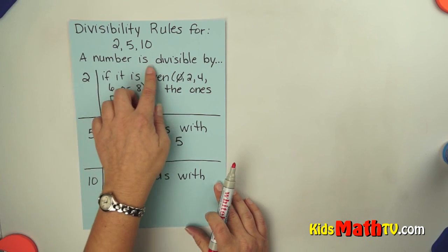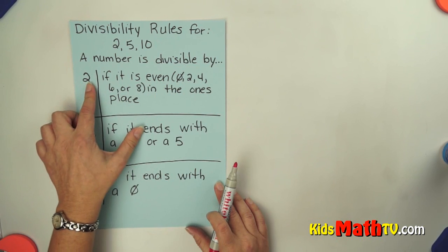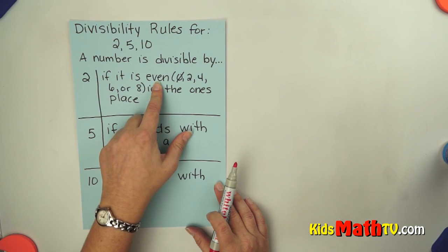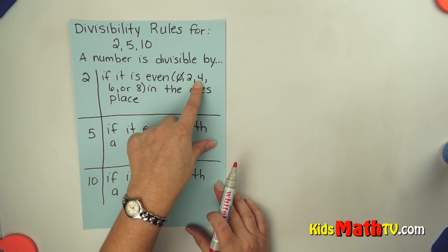You will know a number is divisible by 2 if it is an even number. That simply means there's a 0, 2, 4, 6, or 8 in the ones place.